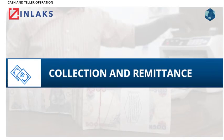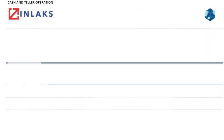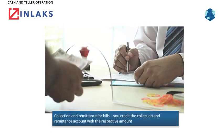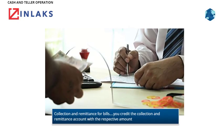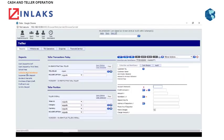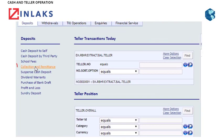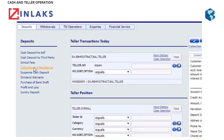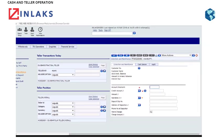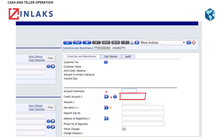Collection and Remittance. Collection and remittance for bills — you credit the Collection and Remittance account with the respective amount. Step 1: Click on Collection and Remittance. Step 2: Type in the required account number in the Credit Account field.